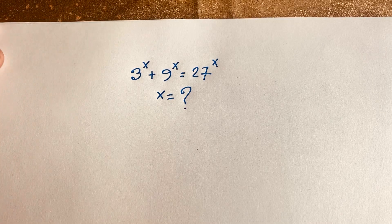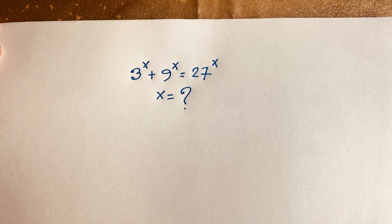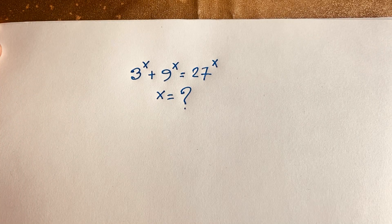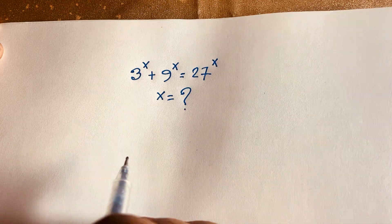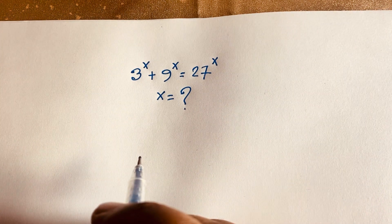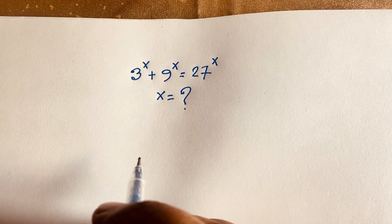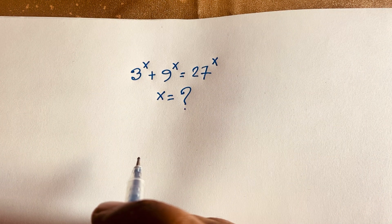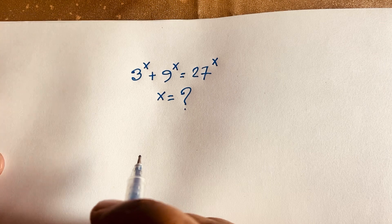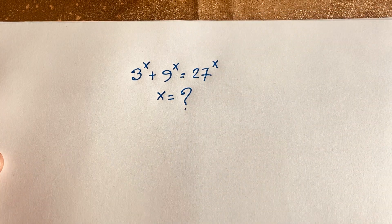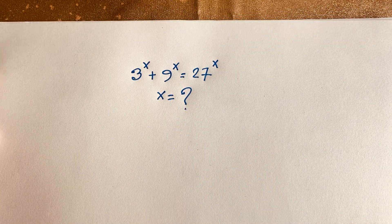Hello everyone. In this video, we have solved this interesting exponential equation: 3 to the power x plus 9 to the power x is equal to 27 to the power x. We will find out what is the value of x in this Math Olympiad question.